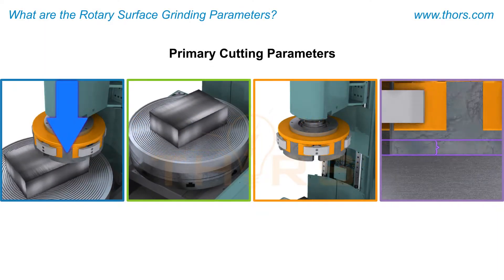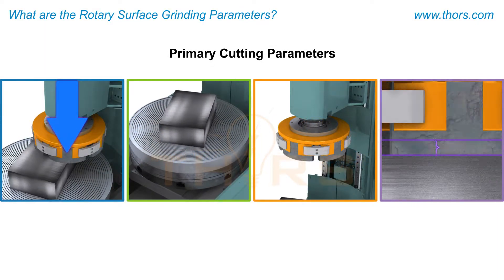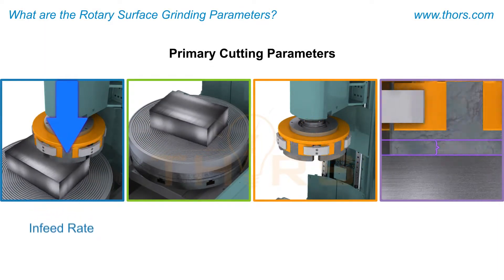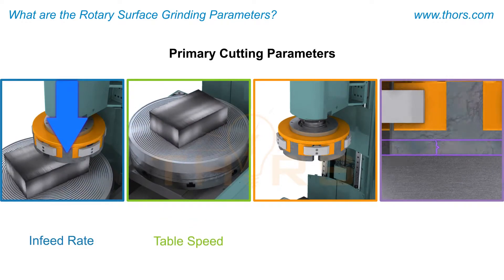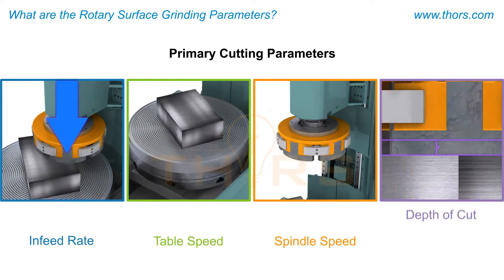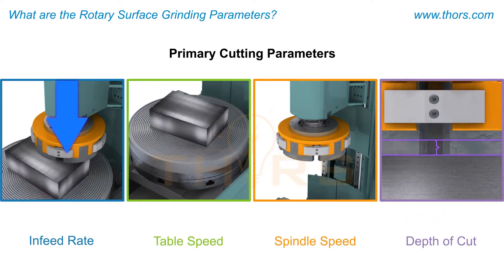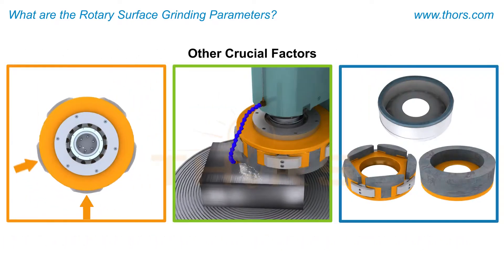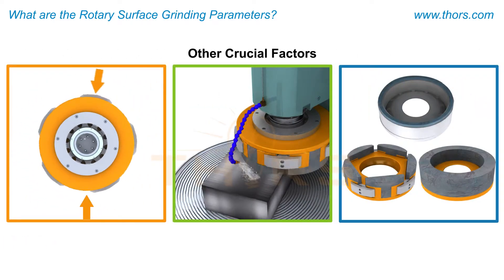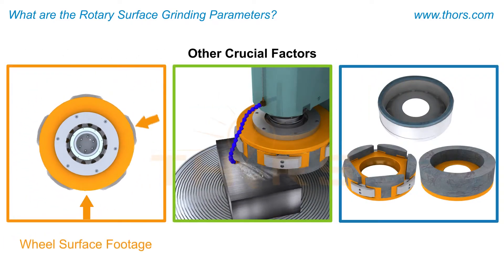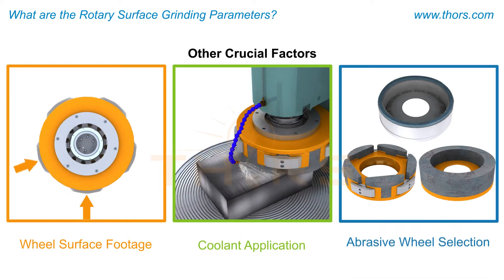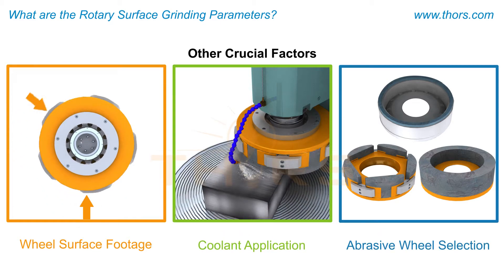The primary cutting parameters for rotary surface grinding are the infeed rate, the table speed, the spindle speed, and the depth of cut. Other crucial factors to be aware of include the required wheel surface footage, the correct coolant, and the proper abrasive grinding wheel selection.